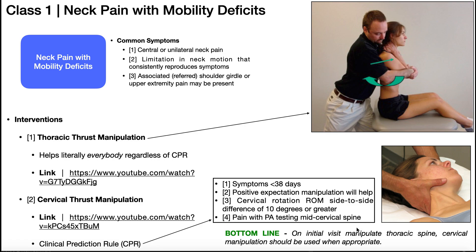In general, if you're going to manipulate, you would probably do a thoracic manipulation on day one and then use cervical manipulations later on if appropriate. Unless the patient specifically wants a cervical manipulation, this is probably not something you'd want to do on the initial visit — it can be a sensitive movement, so the thoracic manipulation is a better choice for day one.